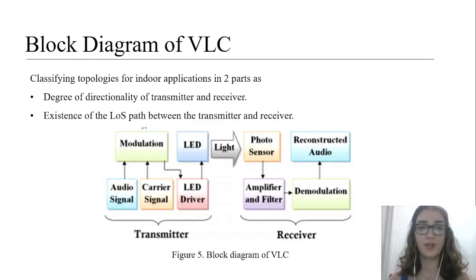Block diagram of VLC: As seen in the previous section, there are some topologies for indoor applications. We can classify these topologies in two parts: the degree of directionality of transmitter and receiver, and the existence of the line-of-sight path between the transmitter and receiver. As you can see in figure 5, the signal modulated by transmitter parts becomes optical light to be detected by photodetector.